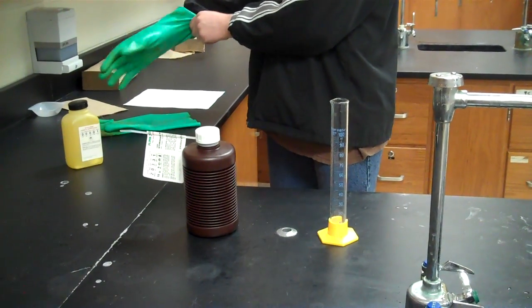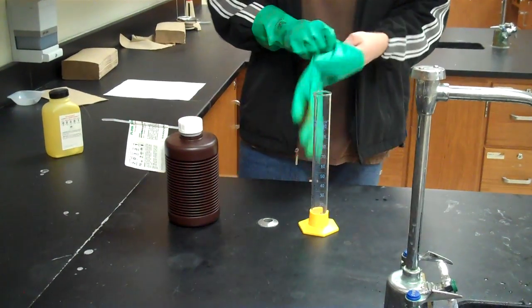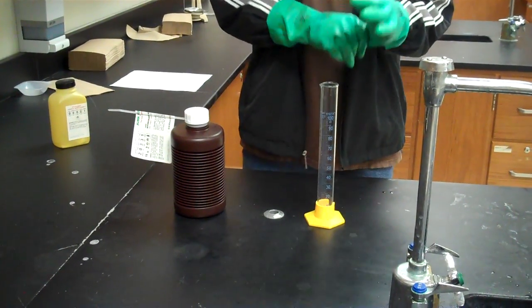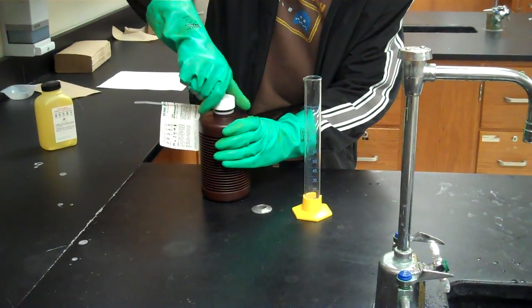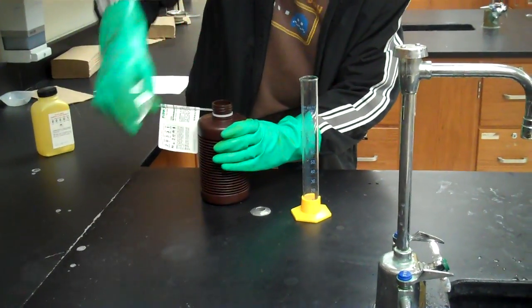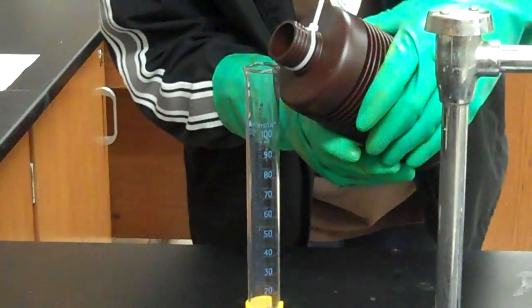He's putting on gloves to operate the 30% hydrogen peroxide. As you see, he will pour 100 milliliters into the graduated cylinder. And you must be very careful, because it is highly reactant with skin.